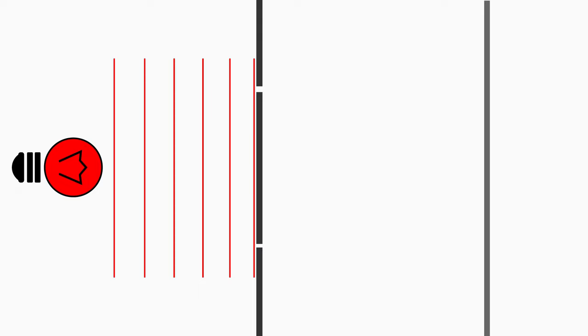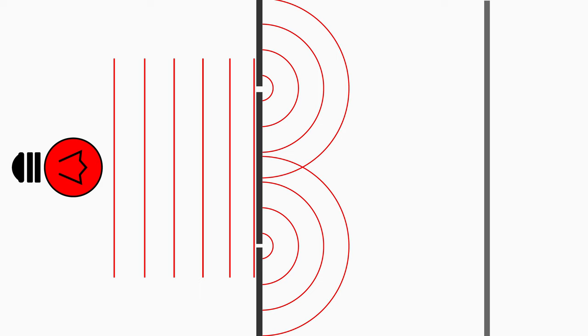If the slit is very thin, then it appears like a point source of light that emits a spherical wave. This can propagate in the whole space behind the slit.